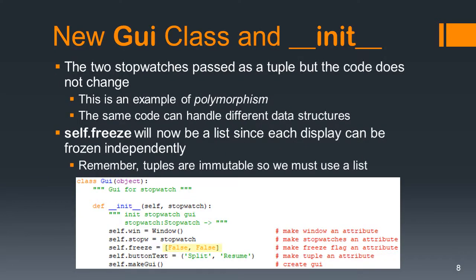In our new GUI class and new init, stopwatch is now going to be passed as a tuple — but the code doesn't change. This is an example of polymorphism, which means the same code can handle different types of data structures, and it's a strength of Python. Self.freeze will have to change because we need to keep track of two independent stopwatches, so self.freeze will turn into a list. We have to use a list because tuples are immutable — that means we can't change it.